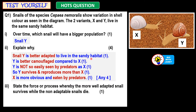For example, if you just write 'snail Y is adapted to live in the sandy habitat', you will not get that one mark because you are not comparing with X. So you must use the word 'better adapted' or 'more well adapted'. Use the comparison words when comparing Y and X. Now lastly, the force or process whereby the more well-adapted snail survives while the non-adaptable snails die is natural selection.